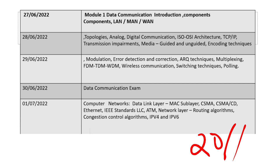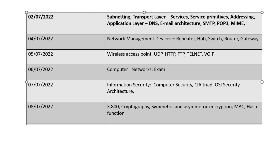Next, the data link layer, MAC sublayer, CSMA, CSMA/CD, Ethernet, IEEE standards, routing algorithms, congestion control algorithms, subnetting, transport layer services, email, architecture, DNS, etc.